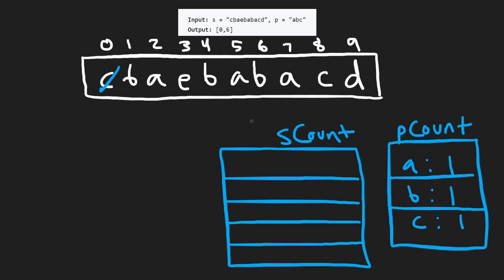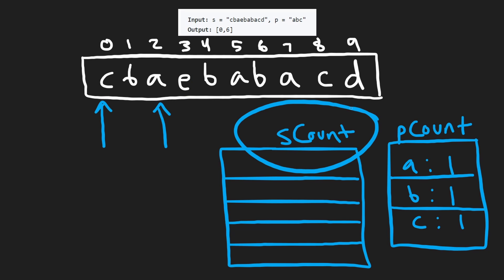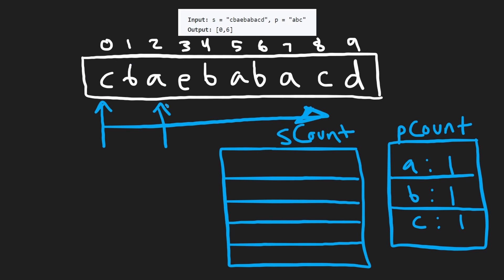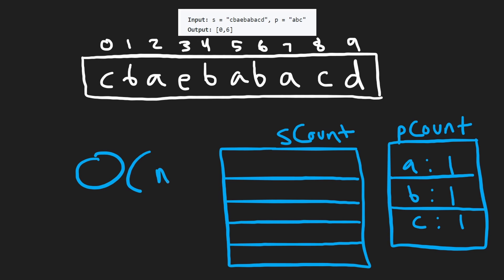This technique is called sliding window. We have two pointers — one at the beginning and one at the end of our substring — and we shift both pointers to the right. As we shift the right pointer, we add the new character to our hash map, and we remove the character at the left pointer. Each pointer movement is an O(1) operation, so sliding through the entire string is O(S).